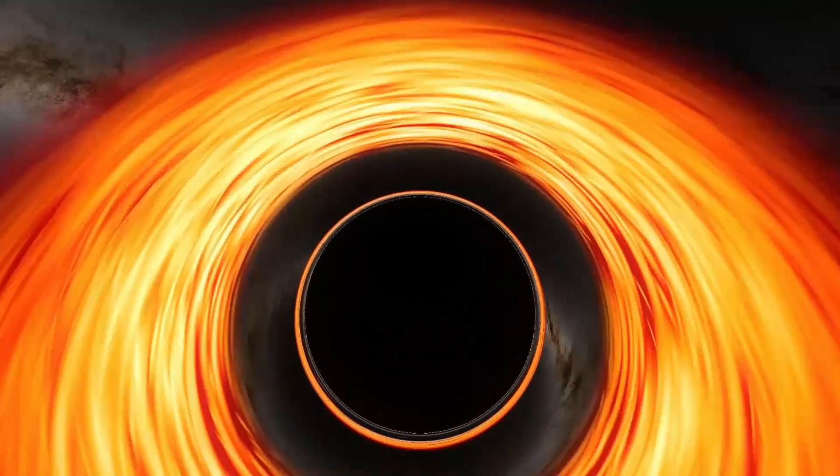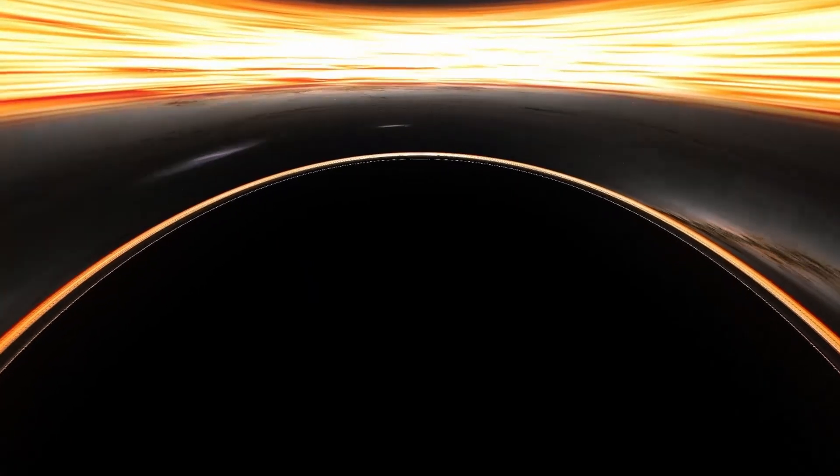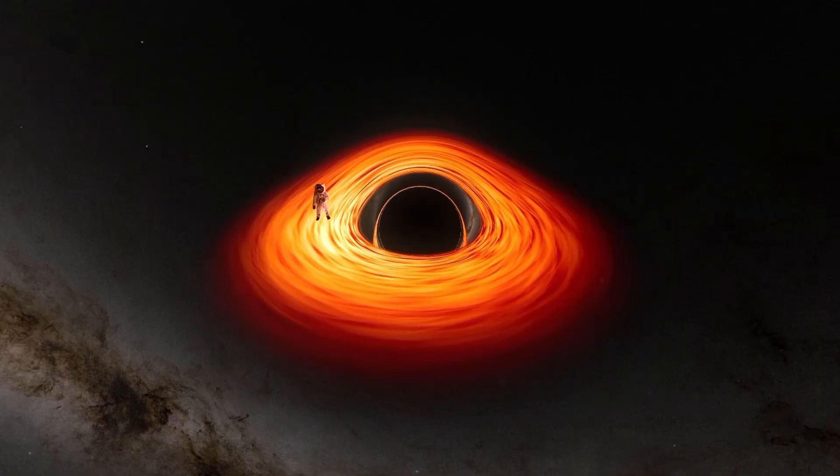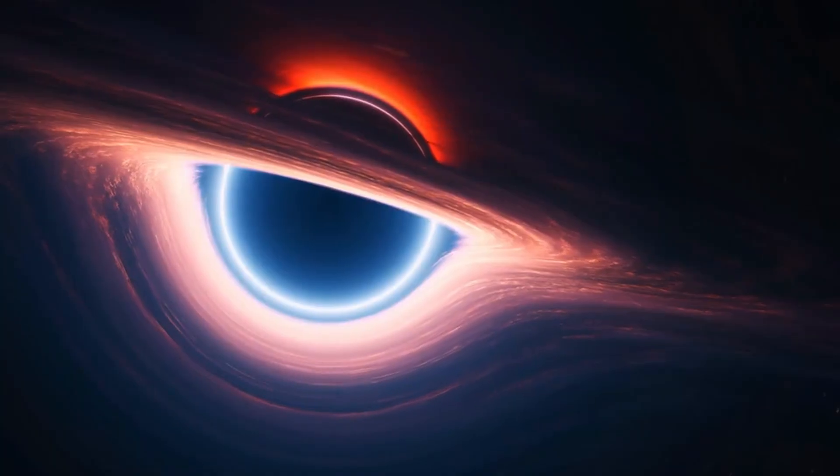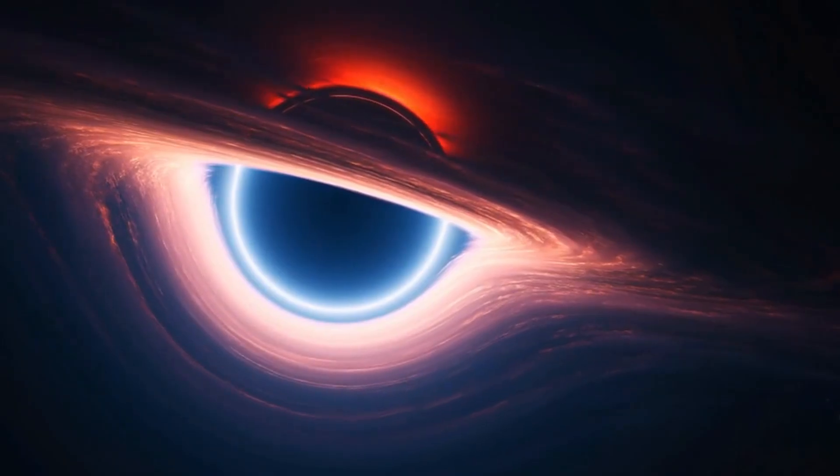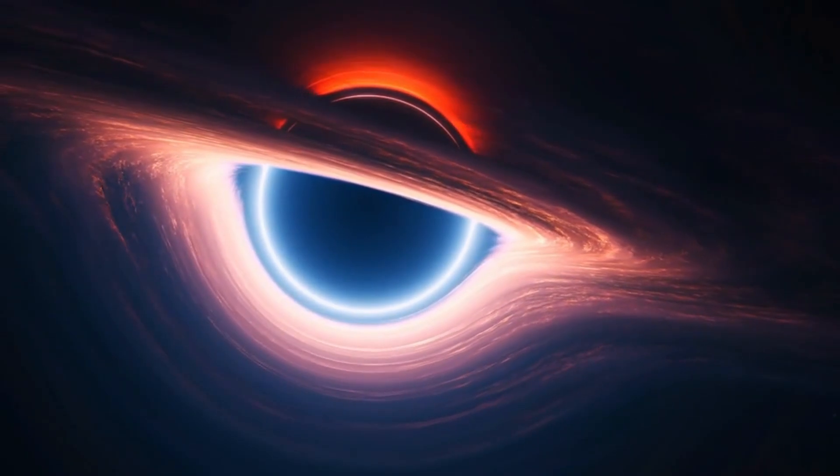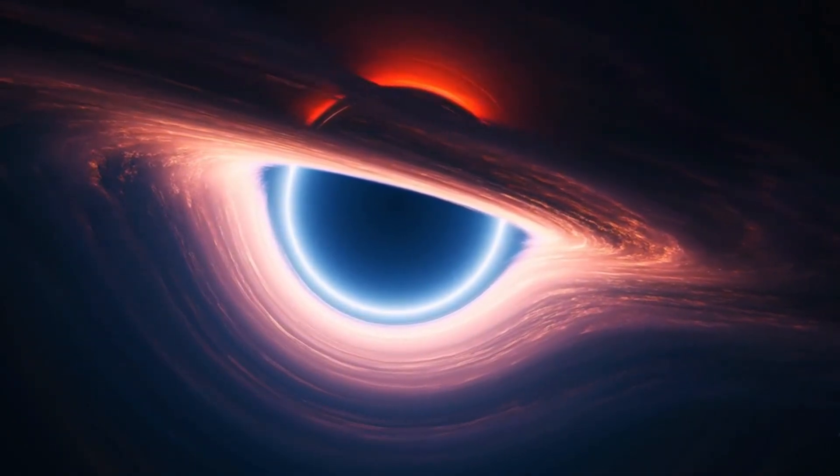From your perspective, you'd just be floating in what seems like empty space. You wouldn't see a sign saying 'welcome to the black hole.' You'd only realize something was wrong when you looked back and couldn't see the outside universe anymore. Meanwhile, to someone watching you from a safe distance, you'd appear to slow down and freeze at the event horizon, your image getting redder and dimmer until it faded away. This is because the extreme gravity would slow down time for you relative to the outside observer. It's like the universe's ultimate magic trick: you'd simultaneously appear to freeze from the outside and continue falling from your own perspective.